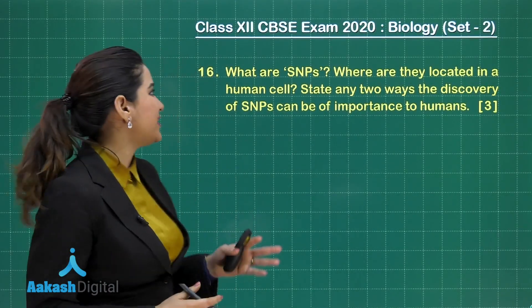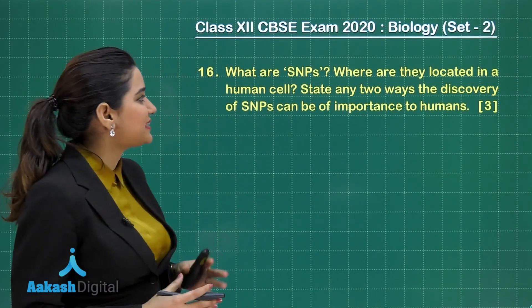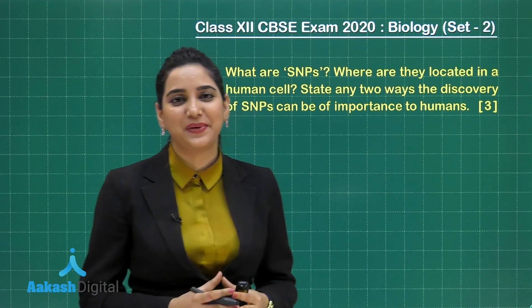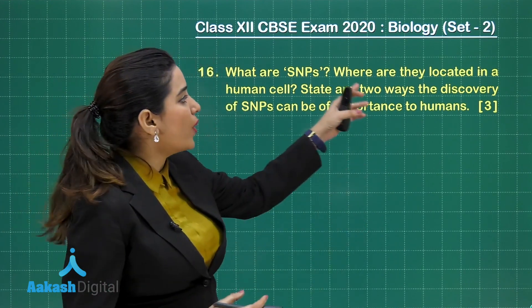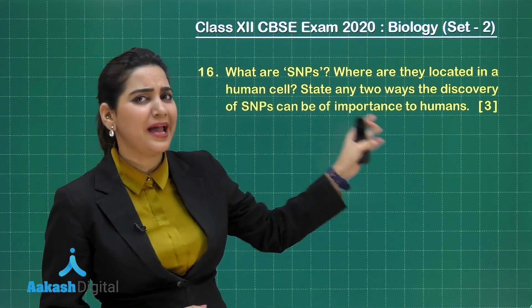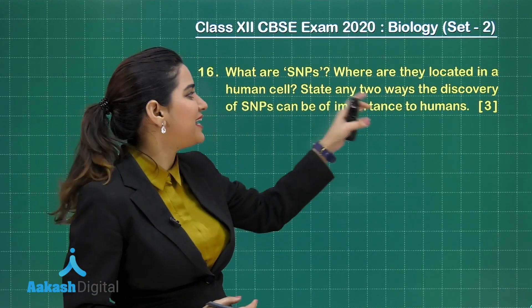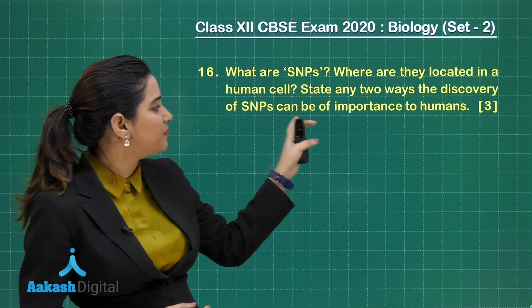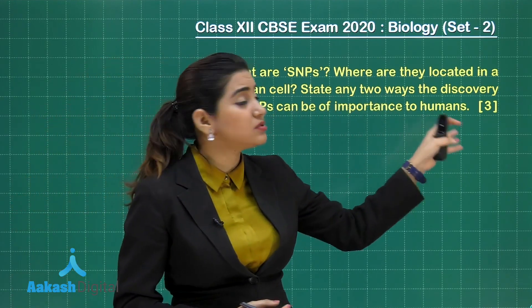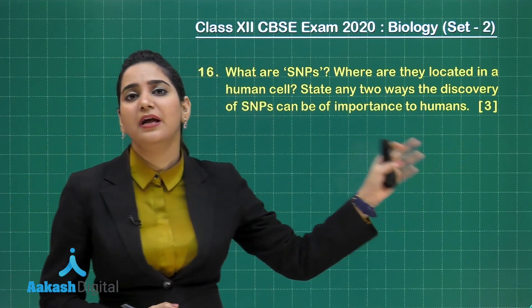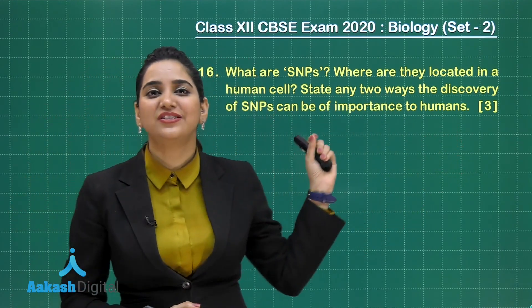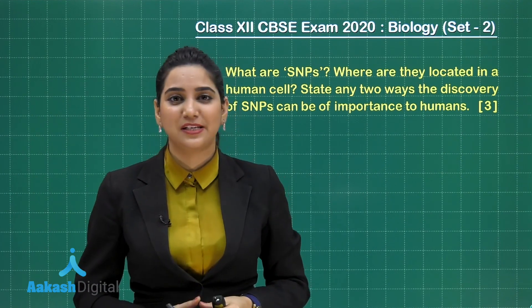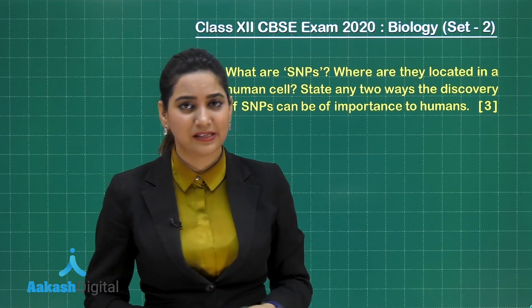Here we are going to talk about question number 16 which asks: What are SNPs? Where are they located in human cells? And state any two ways in which the discovery of SNPs can be of importance to humans. This question has three marks and has come from the chapter Molecular Basis of Inheritance.